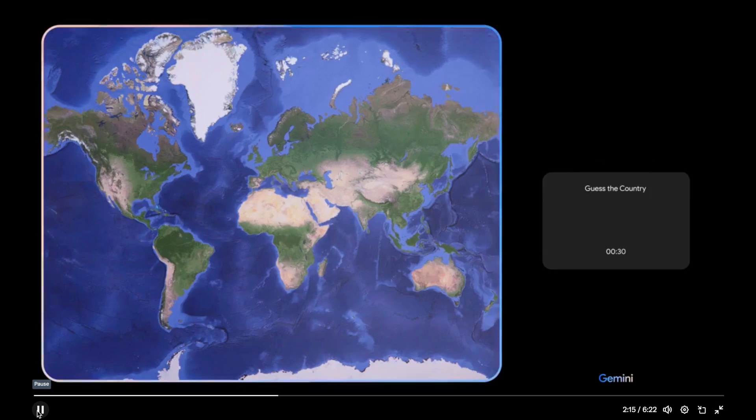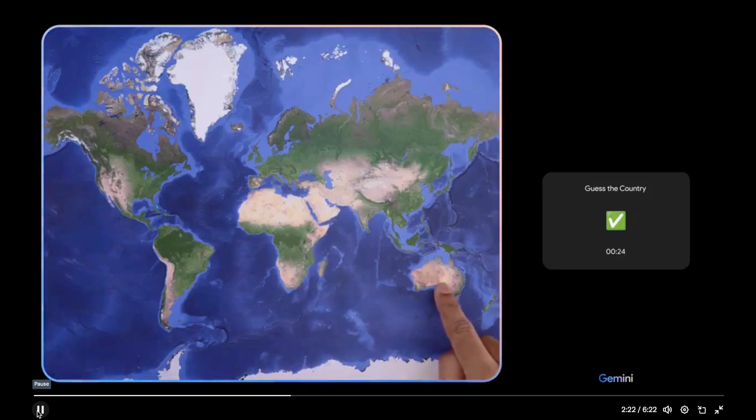Sure, let's do it. Clue one. This country is the home of the kangaroo, the koala, and the Great Barrier Reef. Oh, that's easy. Clue two. This country loves football and has won the most men's World Cups in football history.